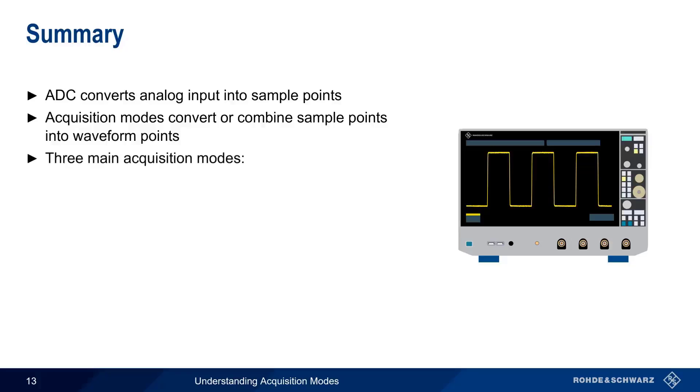There are three main acquisition modes which are found in almost all modern oscilloscopes. Sample mode simply selects a sample point from a given set of sample values. This is the simplest and fastest mode.